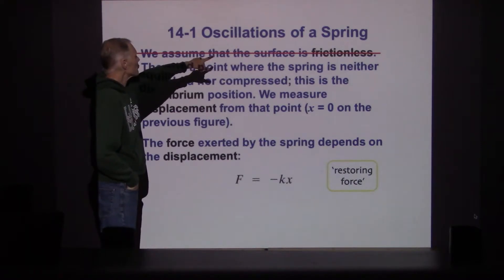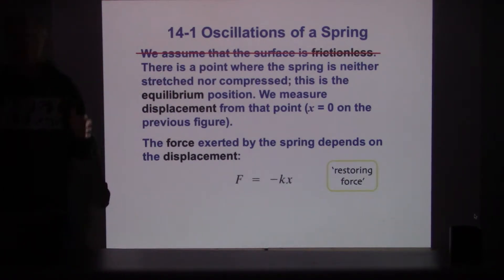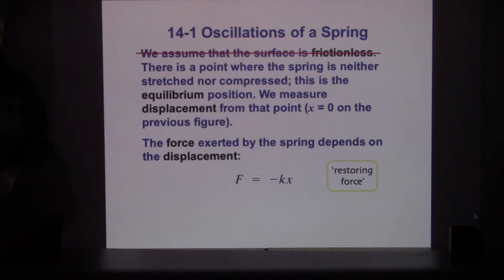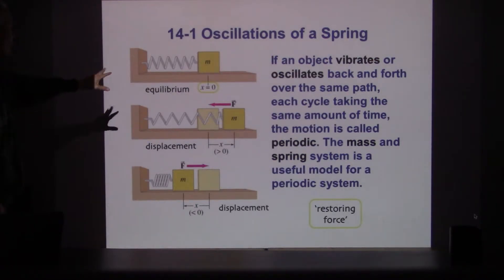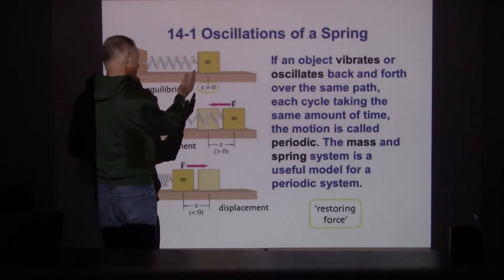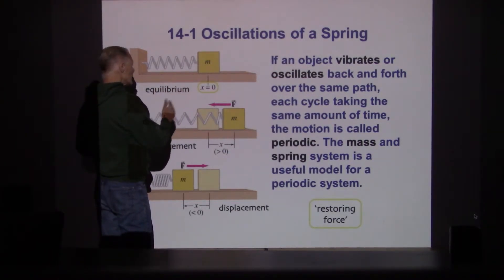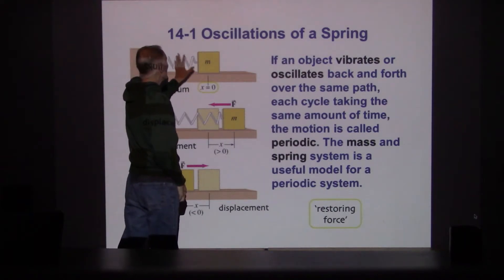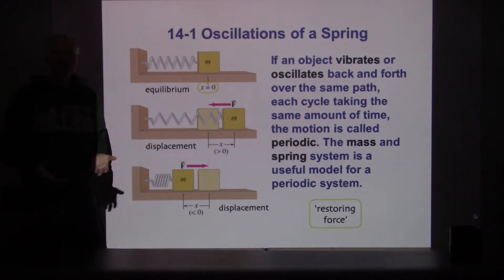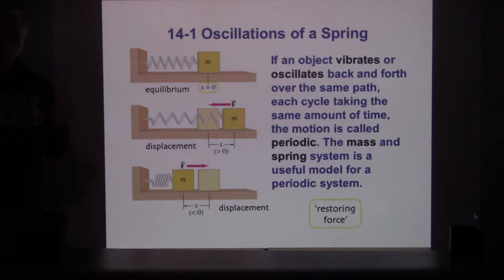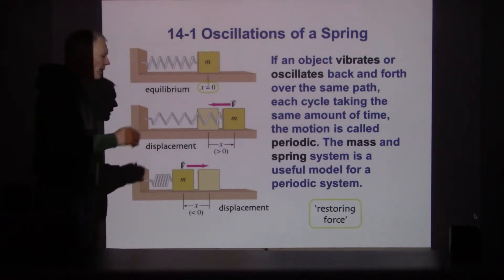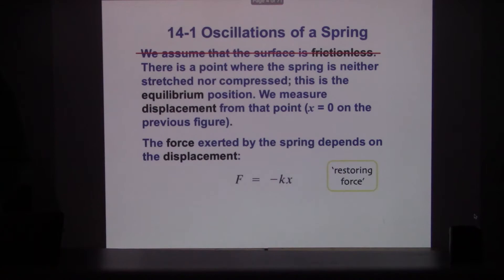We're assuming the surface is frictionless, but we don't have to - we can put friction back in later. We can easily have a setup where there is still friction, and the object will still oscillate back and forth. If there is friction, whatever energy of motion the object has will slowly or quickly be dissipated. For now we're going to start off with a frictionless surface, but later on we'll put some friction back in.